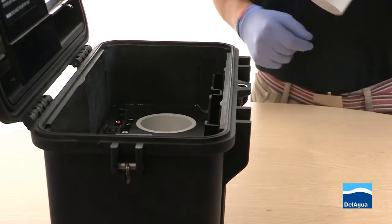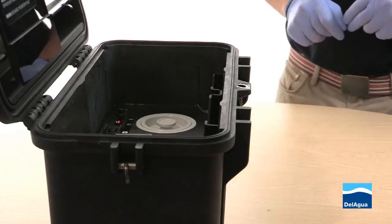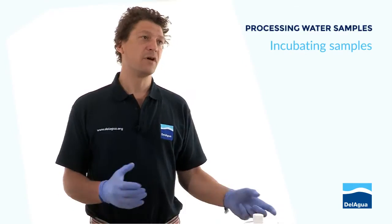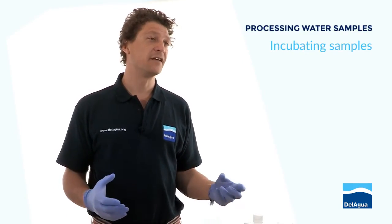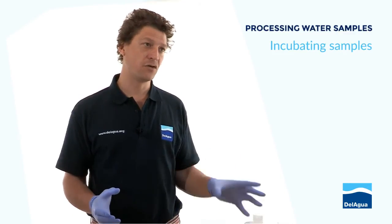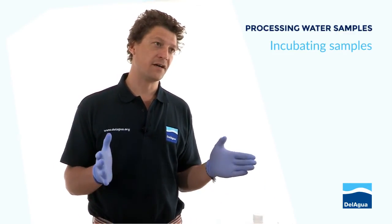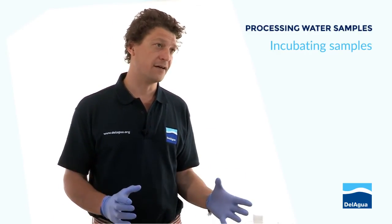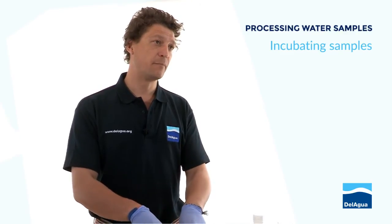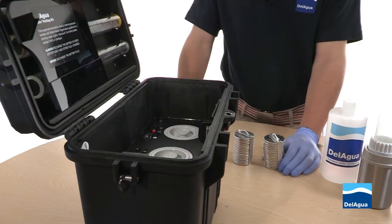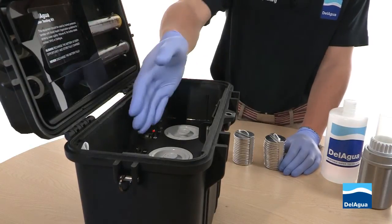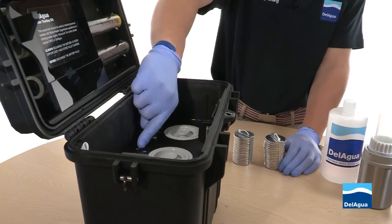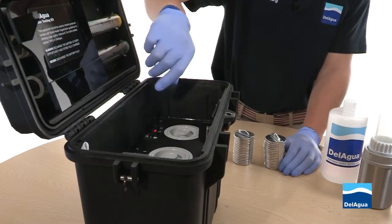Place them into the top of the incubator unit and return the lid. In the circumstance whereby you're using a dual unit, there are two principal advantages. The most common is that it allows you to simultaneously incubate for total coliform as well as isolating by temperature for thermotolerant coliforms, which reduces your analysis time. The other advantage is that if you want to incubate both chambers at the same temperature it gives you added capacity. Ensure that both incubator units have been turned on, the power light is showing, and the temperature light has extinguished, showing that the incubator chamber has come up to temperature.